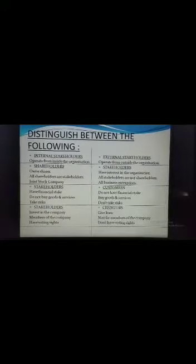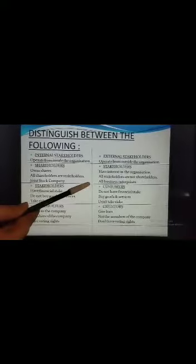The second point of difference is between Shareholders and Stakeholders. Shareholders are persons who own shares. Stakeholders are persons who have interest in the organization. All shareholders are stakeholders, but all stakeholders are not shareholders, because people who own shares will definitely have interest in the organization, whereas people who have interest in the organization may or may not own shares. Only a Joint Stock Company limited by shares has shareholders, whereas all business enterprises — whether Joint Stock Company or Partnership — have stakeholders.